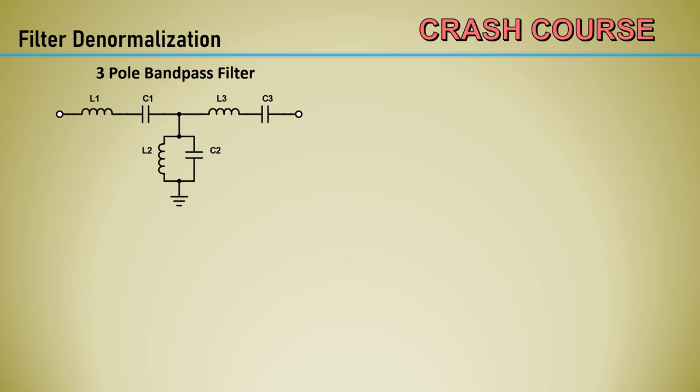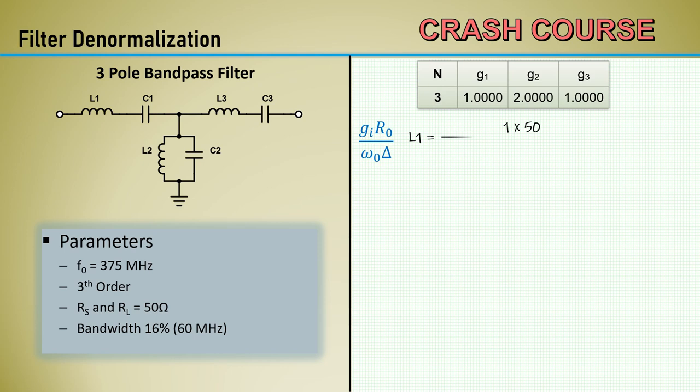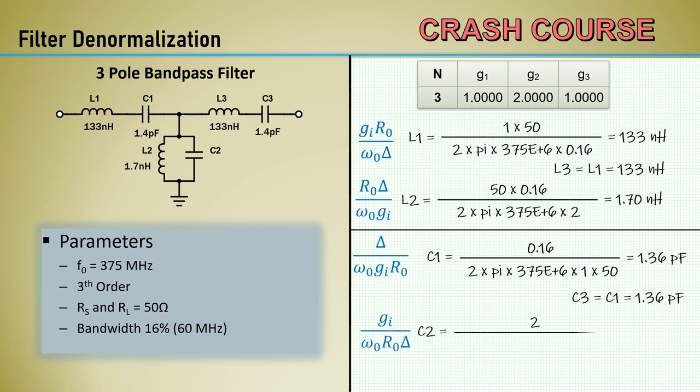Let's try this again with a wider bandwidth. We will keep the same parameters but increase the bandwidth from 2% to 16%, quickly calculating the new element values. Notice the improvement in attaining more reasonable and achievable components. We now have L2 at 1.7 nanohenry and C1 and C3 at 1.36 picofarad. This is significantly more practical and producible.